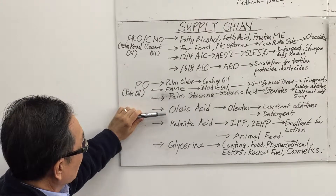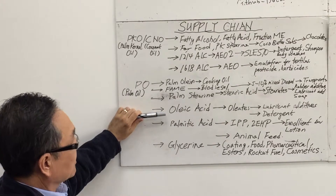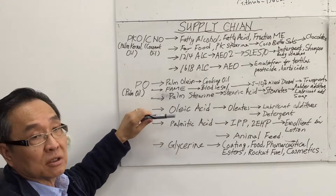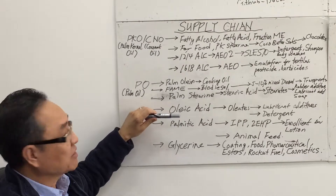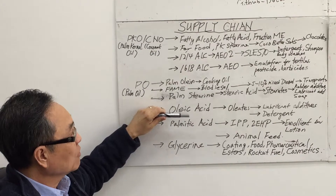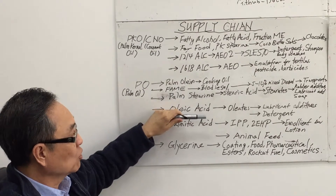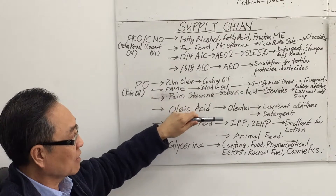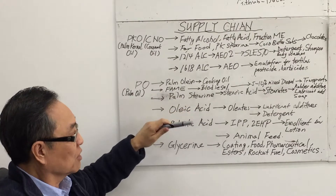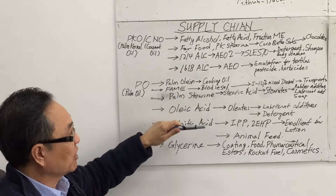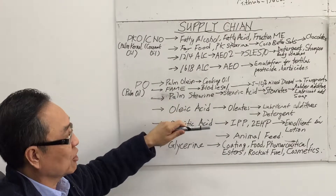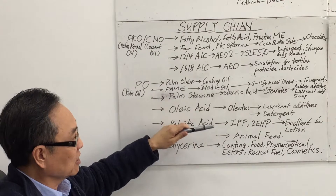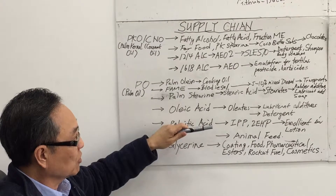The next one is oleic acid. It is also a very important fatty acid derivative, which can be used to make olein. Olein is an important ingredient used as a lubricant additive and also in the detergent industry.